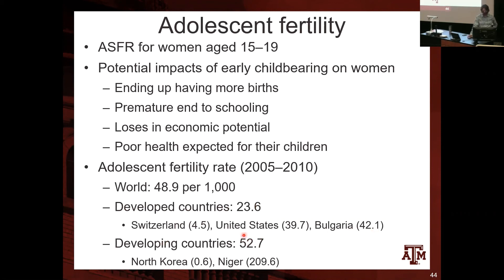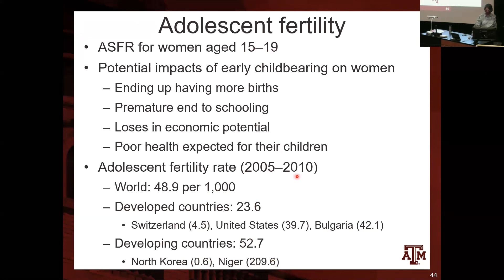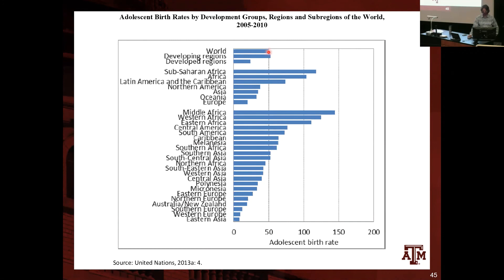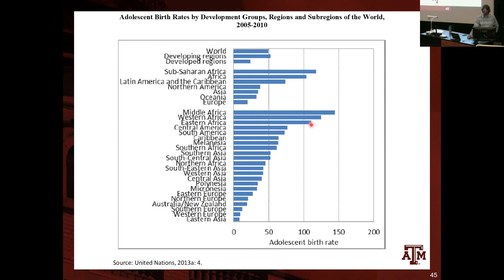In developing countries the rates are also varied. North Korea has only 0.6 births per 1,000 women in this age range, while Niger has 209.6 births per 1,000 women in this age group. There is enormous variation in adolescent fertility across the world. Sub-Saharan Africa has the highest levels overall, and within that continent, Middle Africa, Western Africa, and Eastern Africa have the highest rates of adolescent fertility.